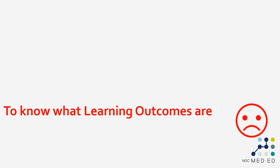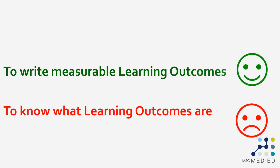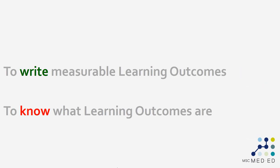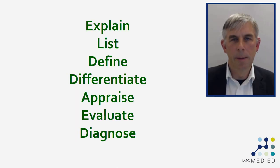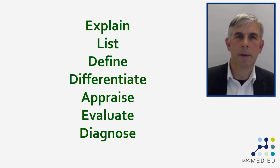One way we might improve it is to change that action verb. Here we've changed it to 'to write measurable learning outcomes.' If this is what I want you to be able to do by the end of the video, then this is something that I can observe and that you can observe and get feedback on. That makes this a much better learning outcome. All we've done is change the action verb from 'to know' to 'to write.' There are lots of different action verbs that can be used in learning outcomes that make them specific, measurable, and observable.